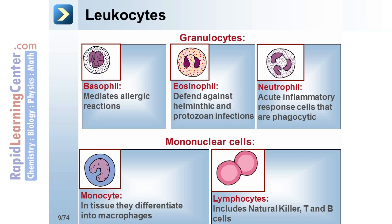and lactoferrin. The mononuclear cells include monocytes, which are large cells with a kidney-shaped nucleus and a cytoplasm with a frosted glass appearance. When present in tissue, monocytes differentiate into macrophages. Also, mononuclear cells include lymphocytes, which will be discussed in greater detail later.